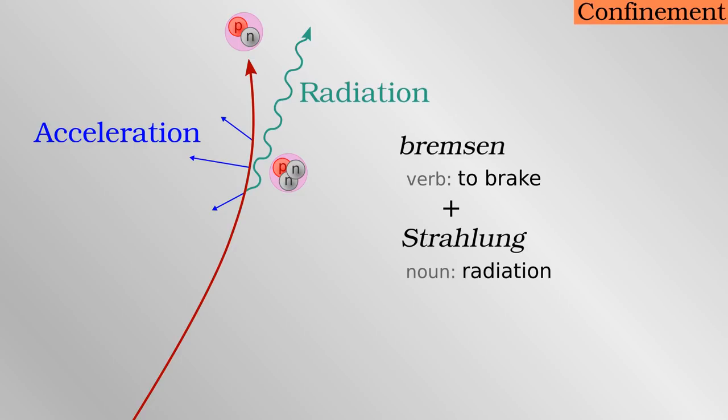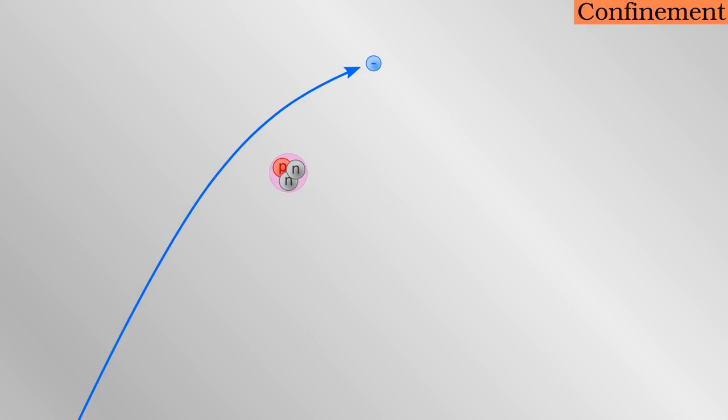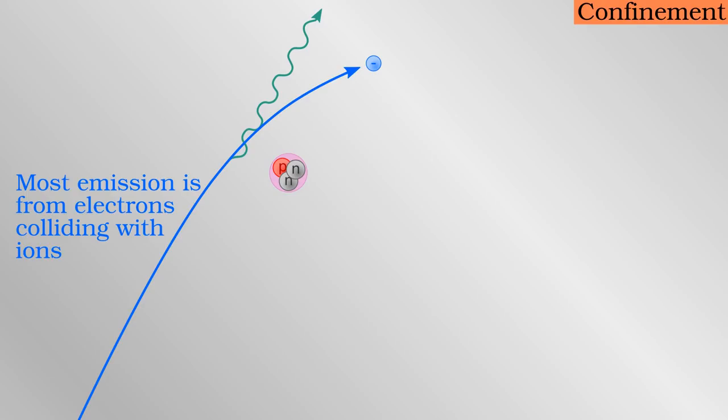The problem is that accelerating charges emit photons by a process called bremsstrahlung, or breaking radiation in German. This is not noticeable for the kind of speeds we experience in everyday life, but it is significant for the kind of motion required for nuclear reactions. A plasma is constantly radiating away energy by bremsstrahlung, with everything from radio waves to x-rays. Once they are emitted, the photons usually, though not always, leave the plasma and energy is lost.